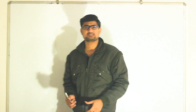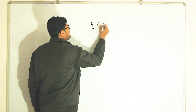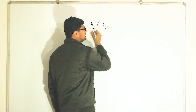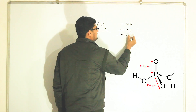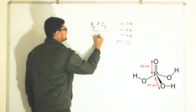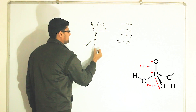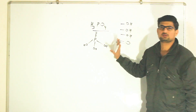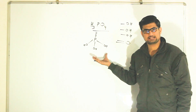Let's take one more example — H3PO4. In H3PO4, there will be three OH fragments, and one oxygen is going to form a double bond. When drawing the structure, we are not worried about the central atom because it may contain more than eight electrons.